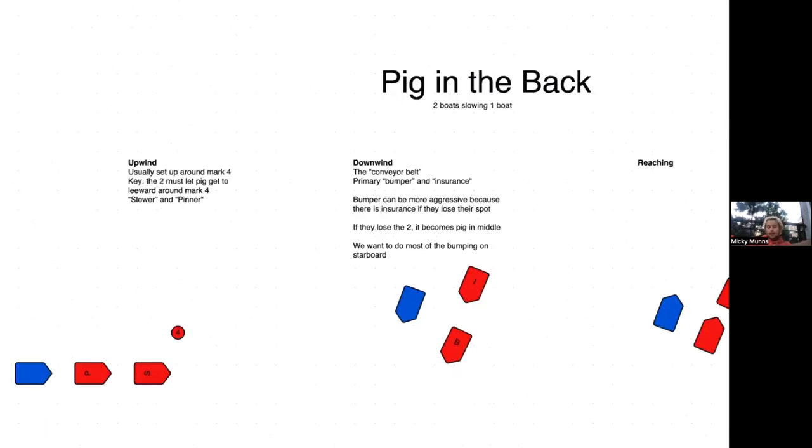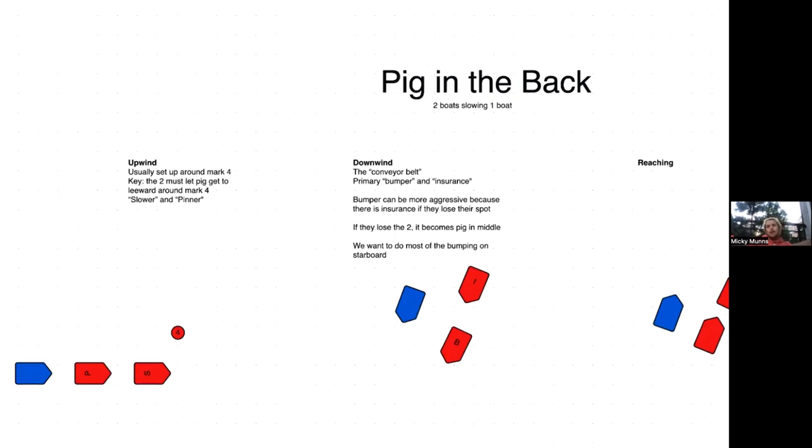Let's talk about it upwind. This is usually set around mark four, and there's a couple situations where you really need it, which I will talk about in our 2v2 and 3v3 videos. Basically we have the pinner and the slower. The slower would be the one in this situation, the pinner would be the two or the second boat in that pair. What we want to do is start to slow and even work high as the pinner, and we want to basically let the pig get to leeward of us. So we're going to round the mark like so.